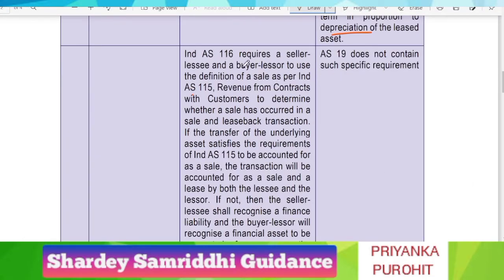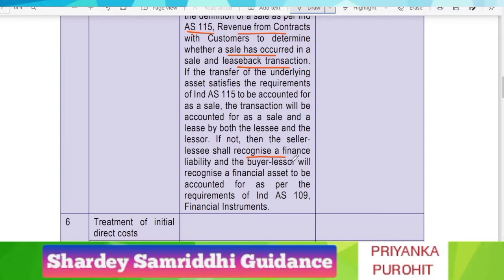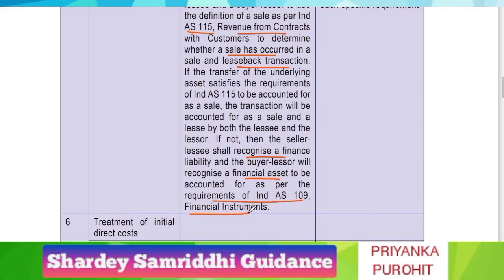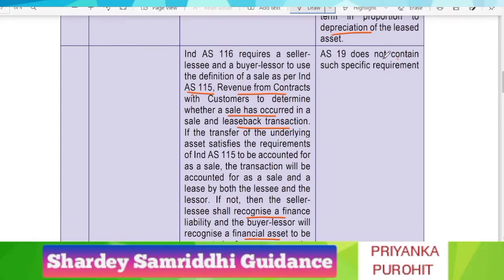Also, in IndAS 116, whenever there is a sale and leaseback transaction, two other IndAS standards will be applied. IndAS 115, which is Revenue from Contracts with Customers, is used to determine whether a sale has actually occurred in a sale and leaseback transaction. Additionally, when the seller-lessee recognizes a finance liability and the buyer-lessor recognizes an asset — that is, when a sale and leaseback transaction results in a financial asset and financial liability — we have to follow the requirements of IndAS 109, which is Financial Instruments. AS 19 does not contain any such specific requirement.